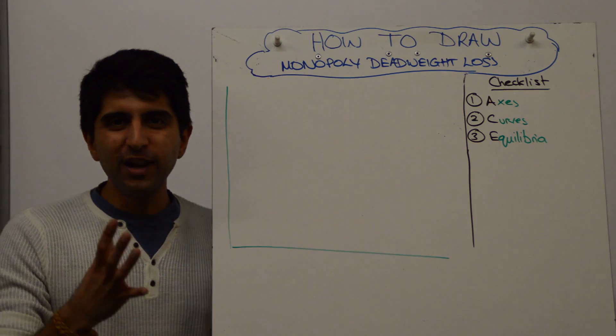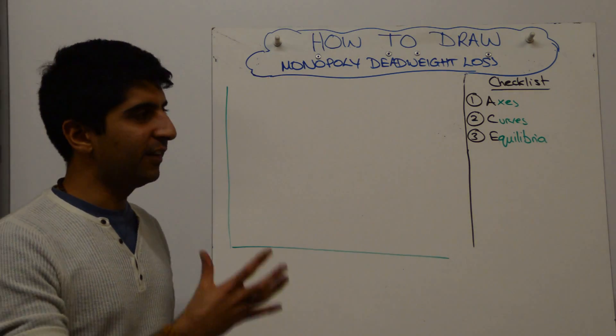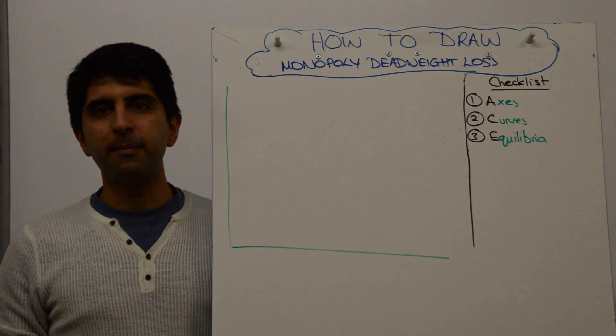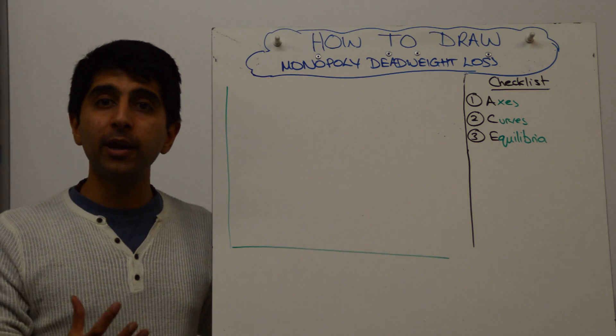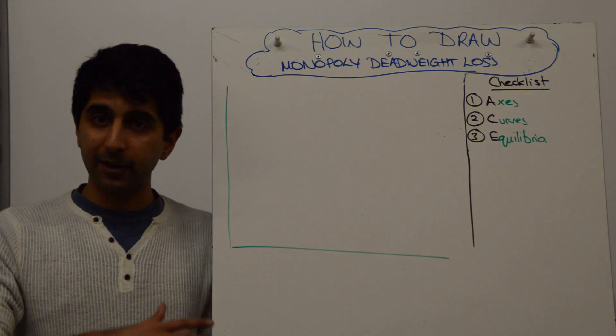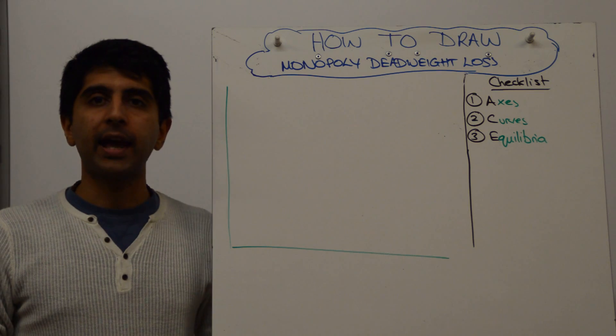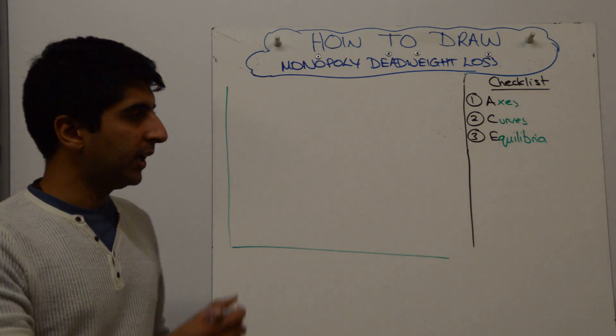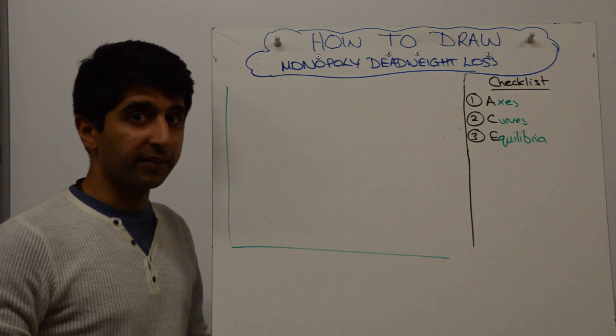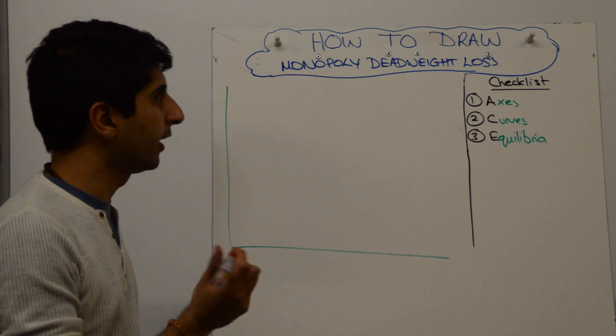Hi everybody! A really powerful evaluation point to make is the deadweight loss argument that a monopoly can cause. How do you construct that deadweight loss diagram?